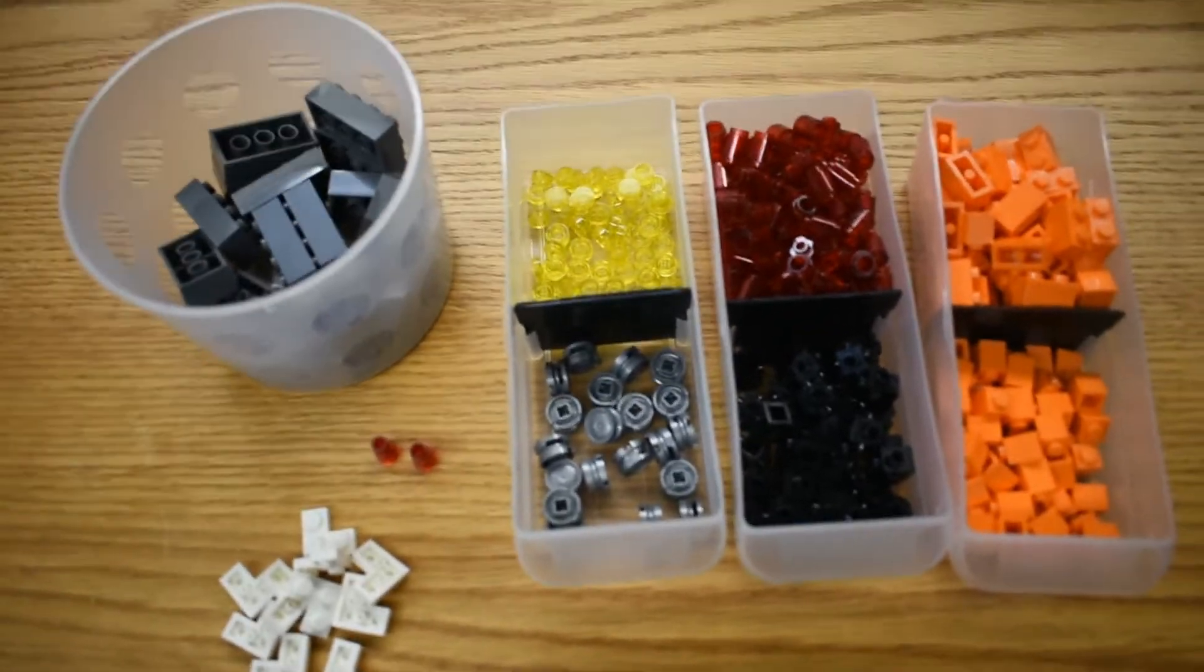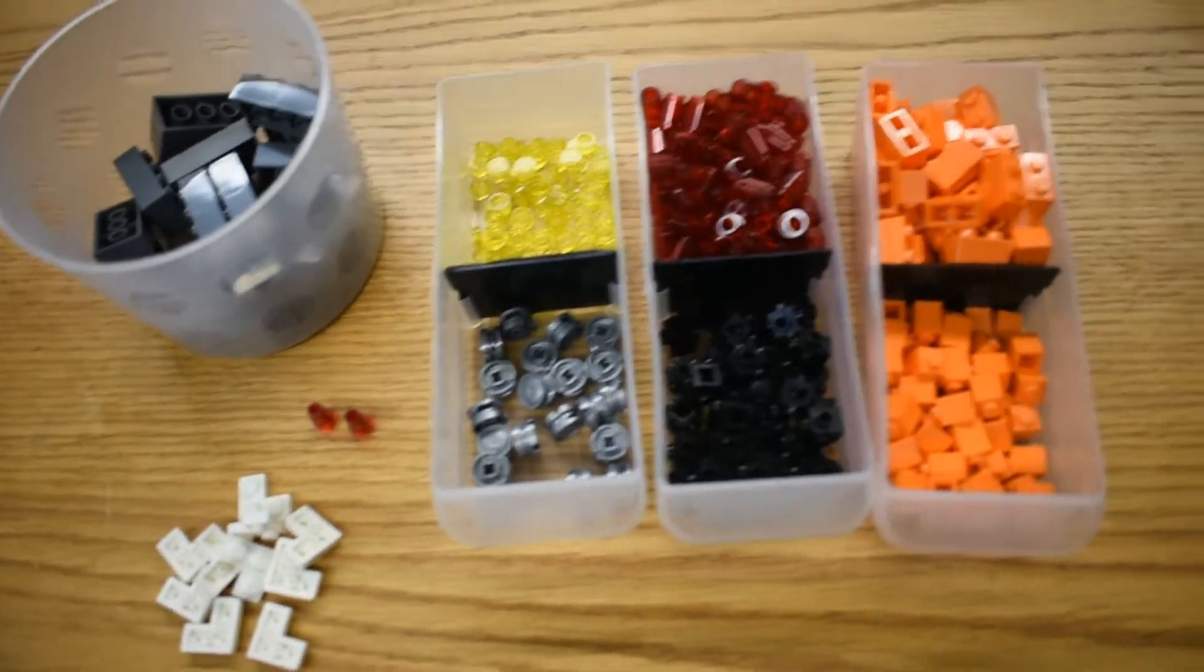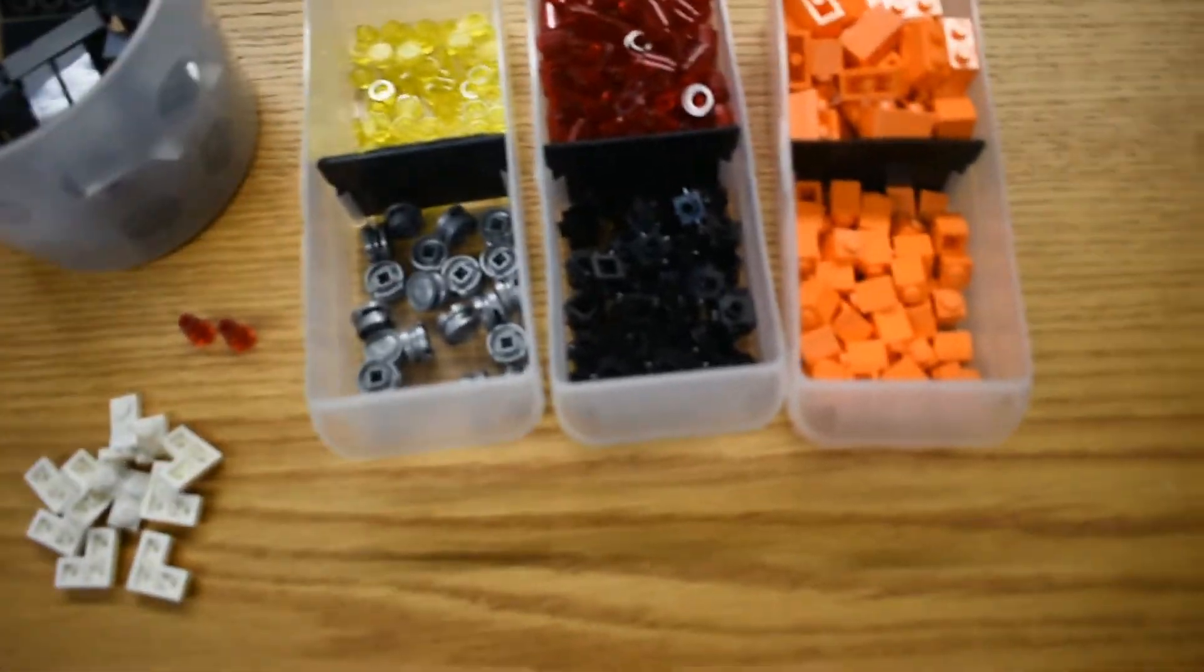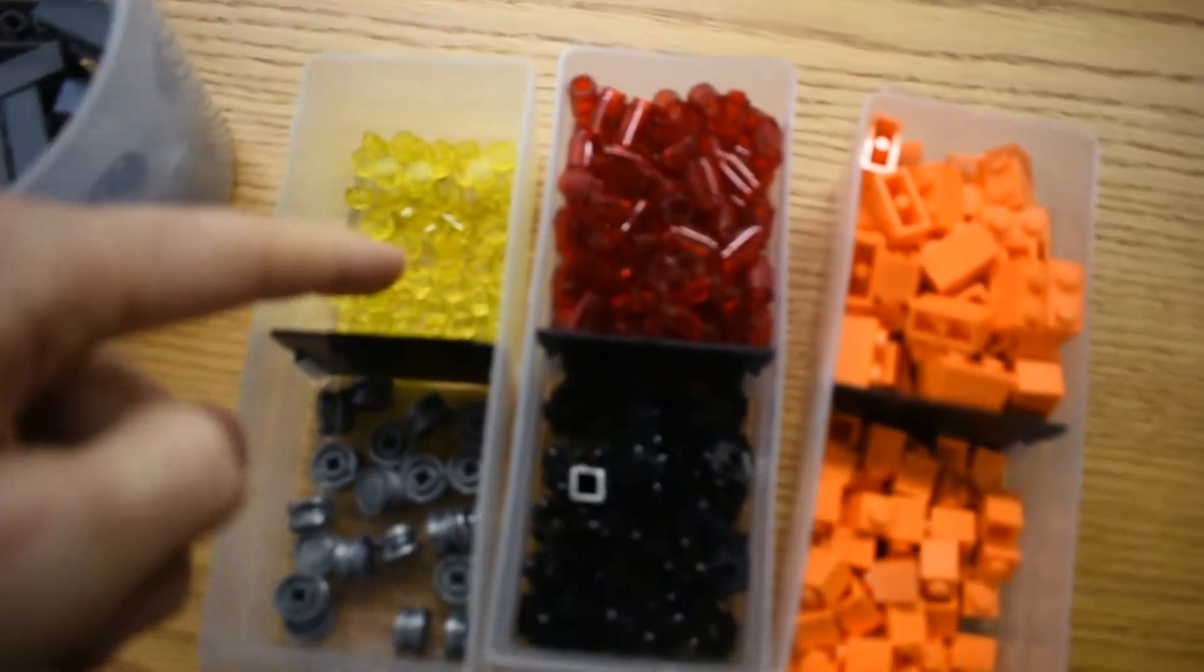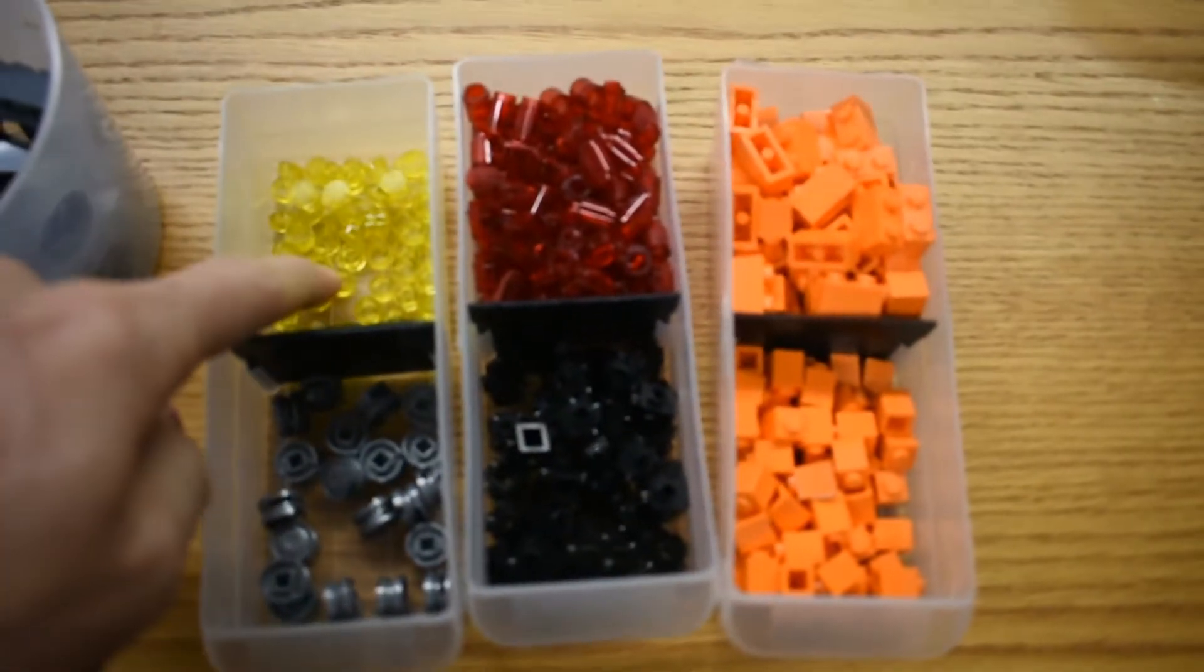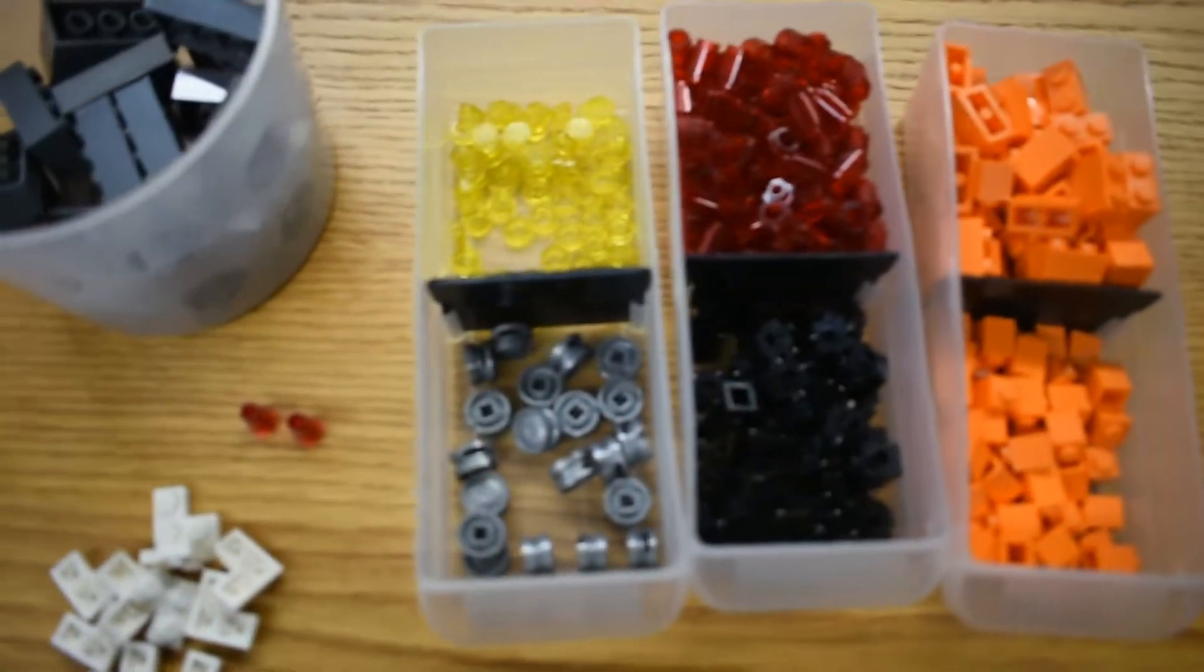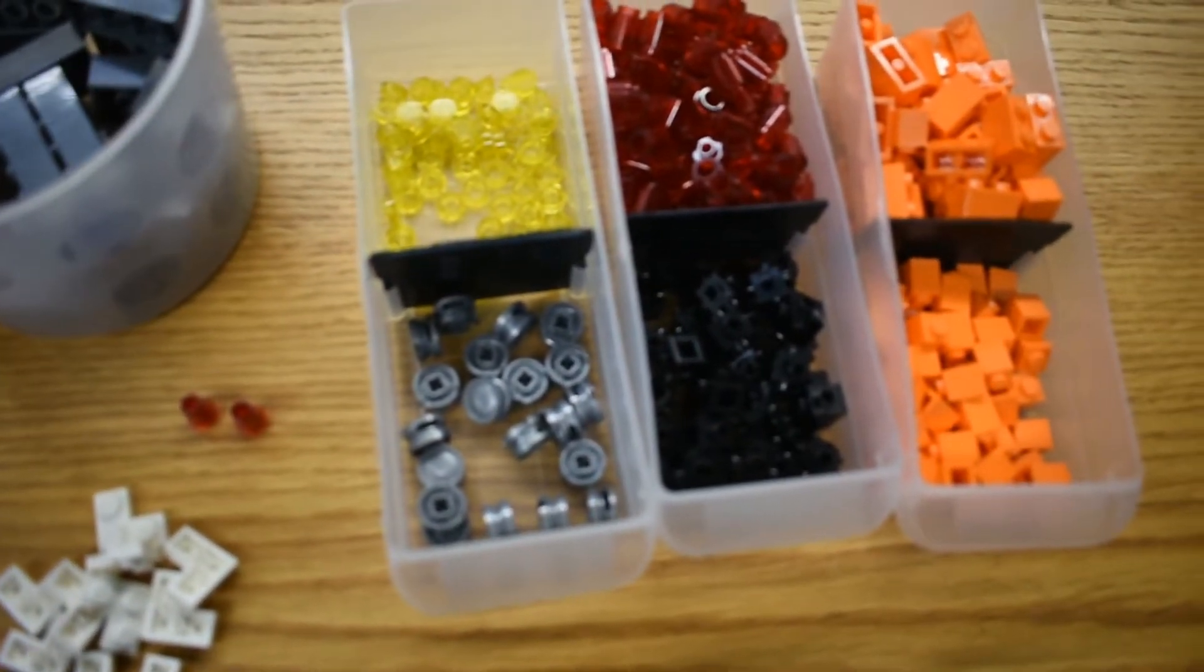And some of the parts actually got 2x4 bricks here in the dark bluish gray. So that's kind of a larger piece, but the rest quite small. Especially the 1x1 tiles, the transparent yellow. This was a piece I had actually got in Kansas City, so I didn't really need to get more of these.